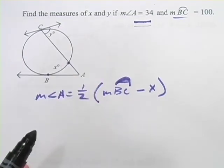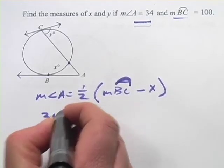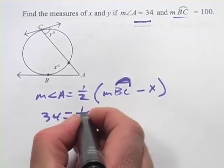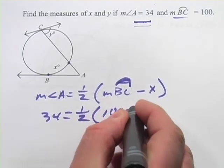We have to figure out how to solve for y up here too, but we'll get to that in just a minute. So, measure of angle A is 34, and that equals one half of, and measure of arc BC is 100 minus x.